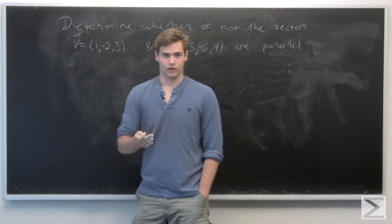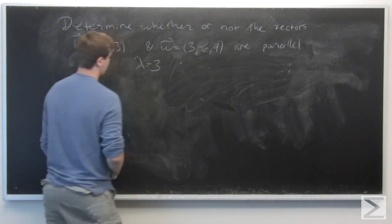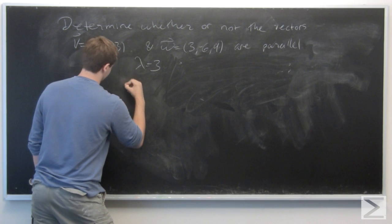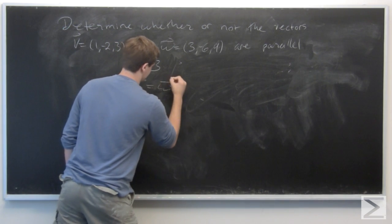And well, right off the bat, we can see that if lambda equals 3, then 3v is equal to w.